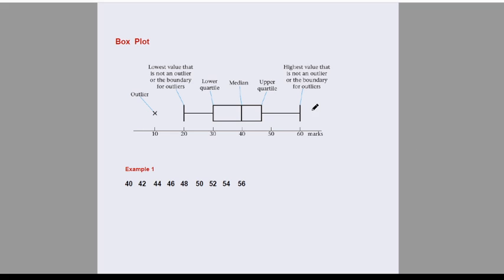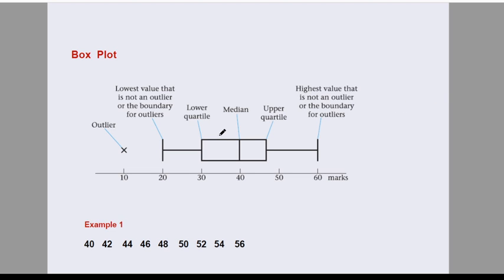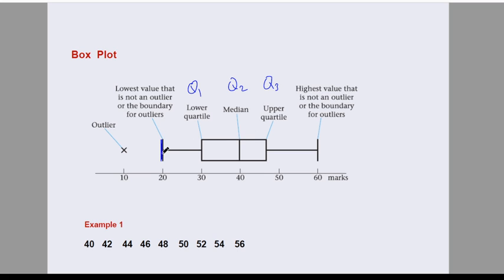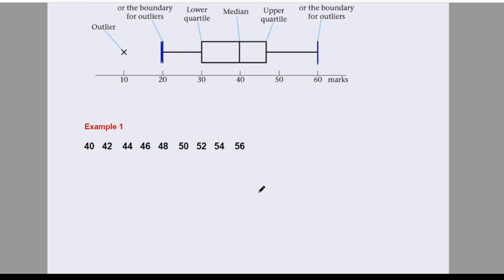A box plot gives you a visual representation of data using Q1, Q2, and Q3. For any box plot, Q1 is the lower quartile, Q2 is the median, and Q3 is the upper quartile. The plot also shows the lowest and highest values. I'll discuss outliers later. You can draw a box plot if you know Q1, Q2, and Q3.